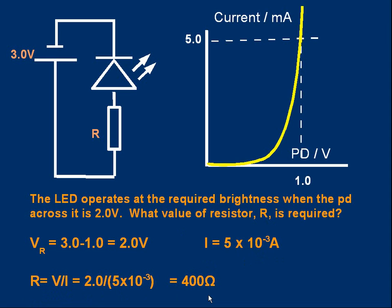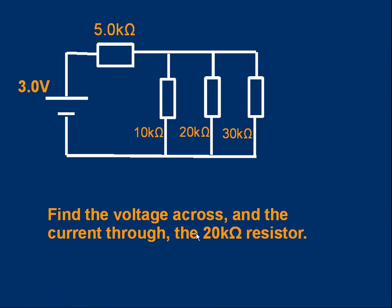One final and slightly harder question. Here's the circuit, take a look carefully. You have got to find the voltage across and the current through the 20 kilo ohm resistor, that's the middle of those three on the right. What is the voltage across that resistor? What is the current through it? Pause the video, have a go.